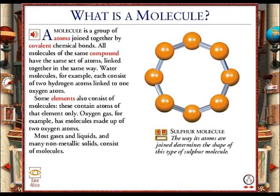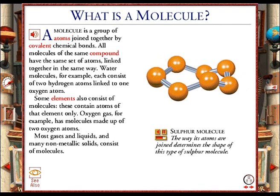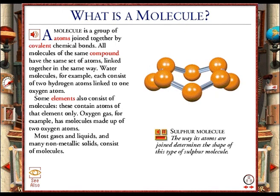In one form of the element sulfur, each molecule consists of eight sulfur atoms. If we look at this molecule from above, we can see that the atoms are linked to form a ring. If we turn the molecule onto its side, we can see that the ring is not flat. The sulfur atoms alternate up and down because of the angle of the bonds linking them together.